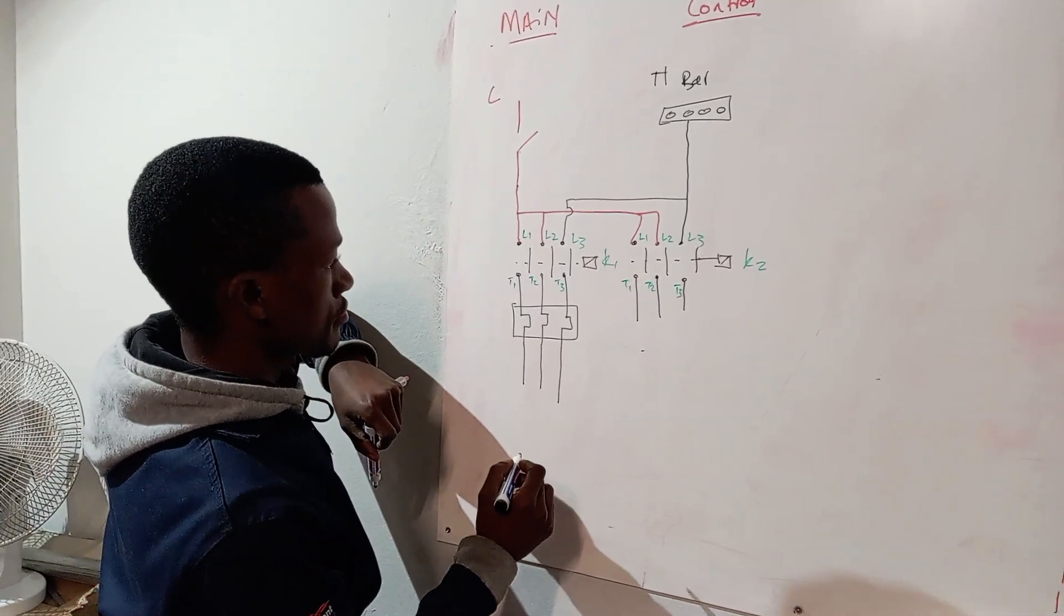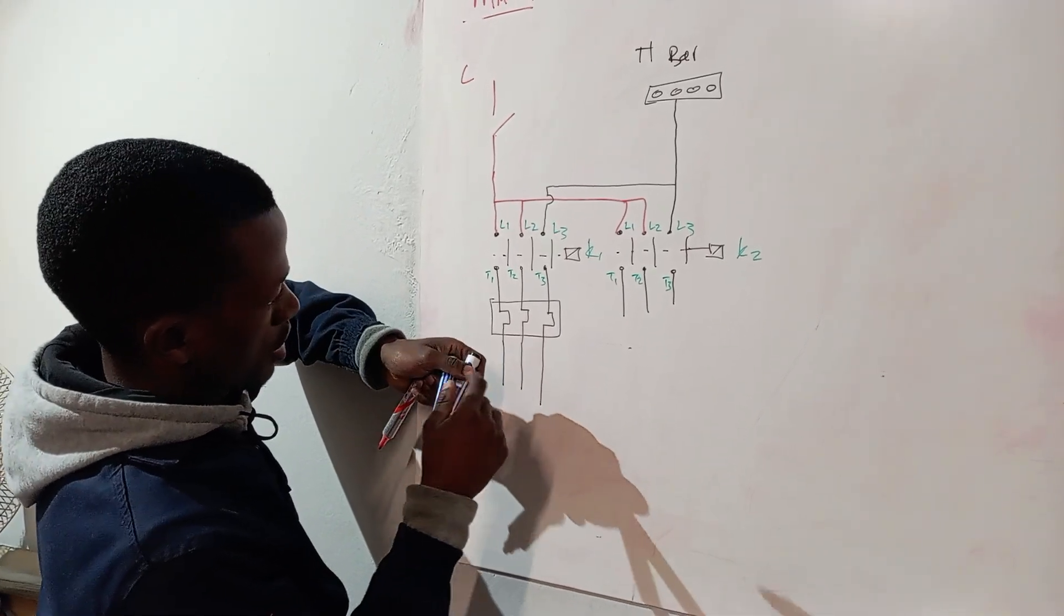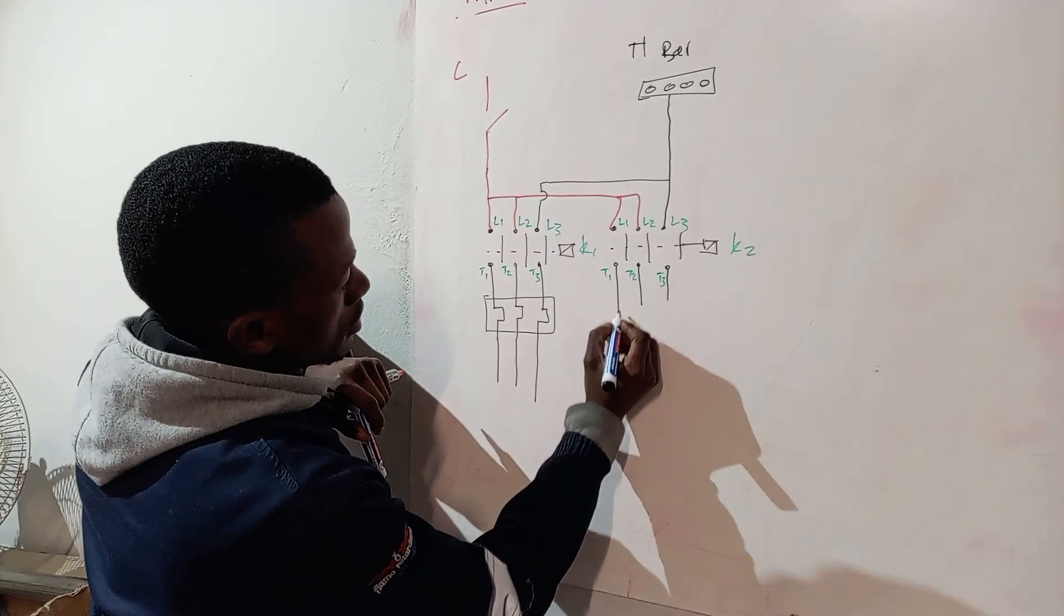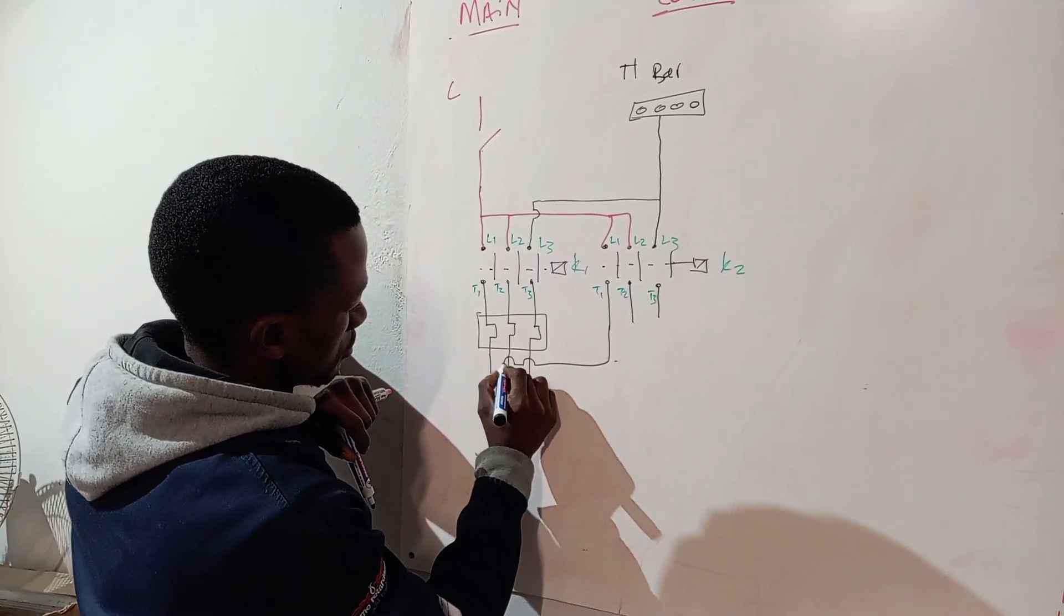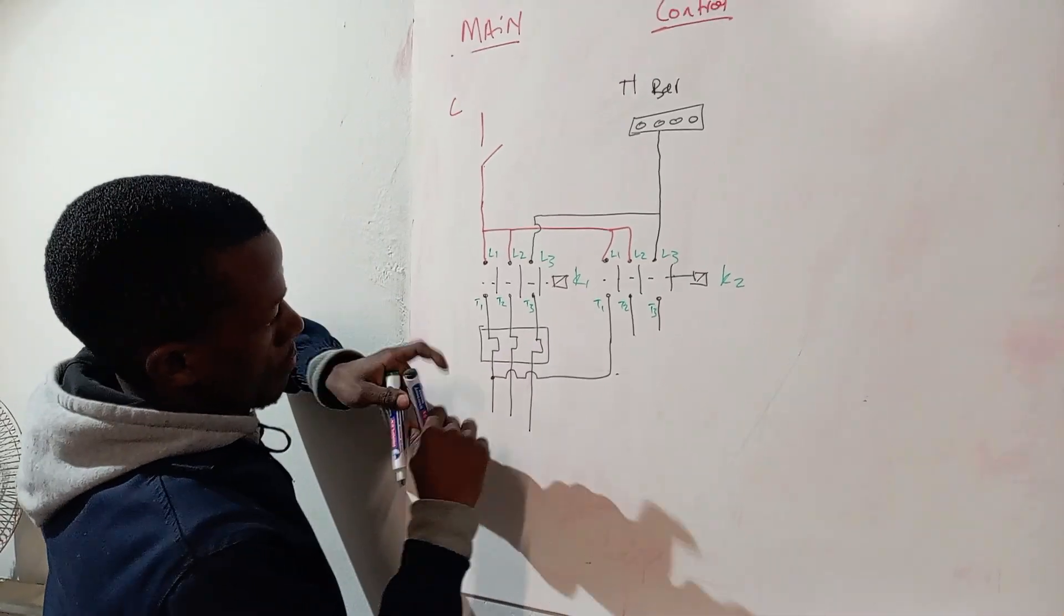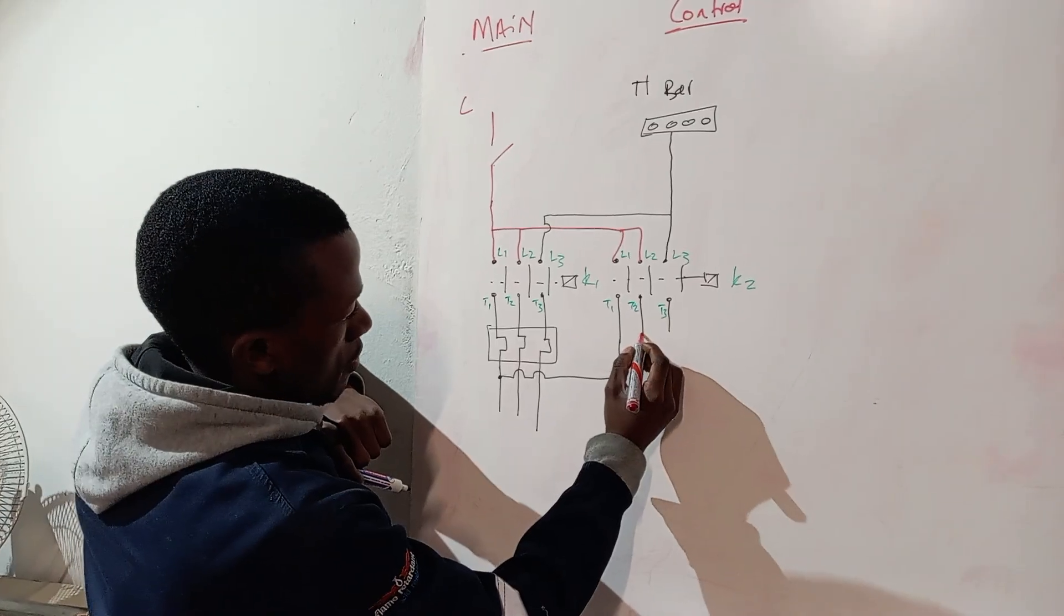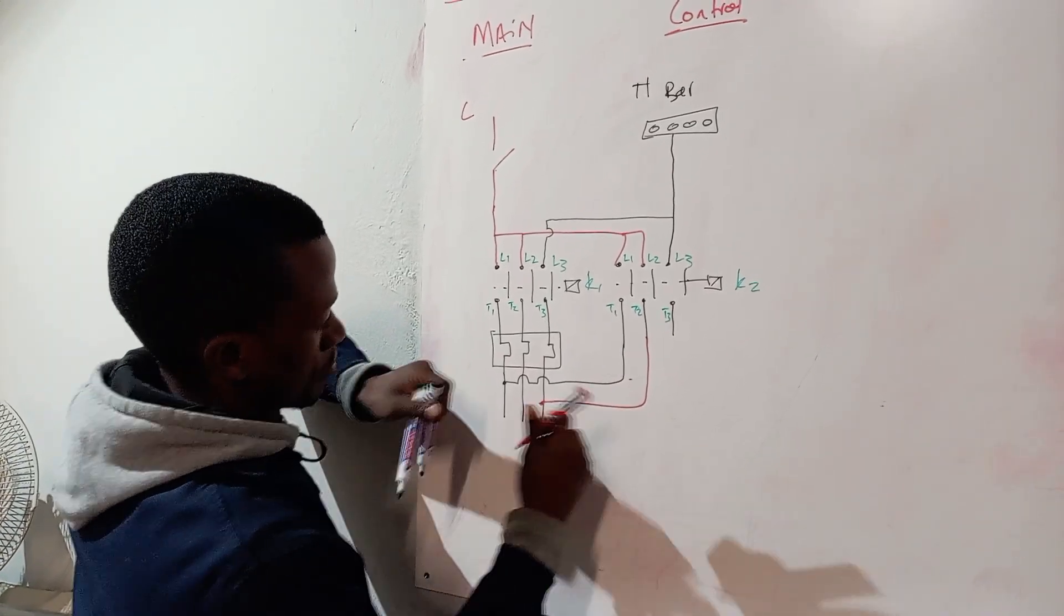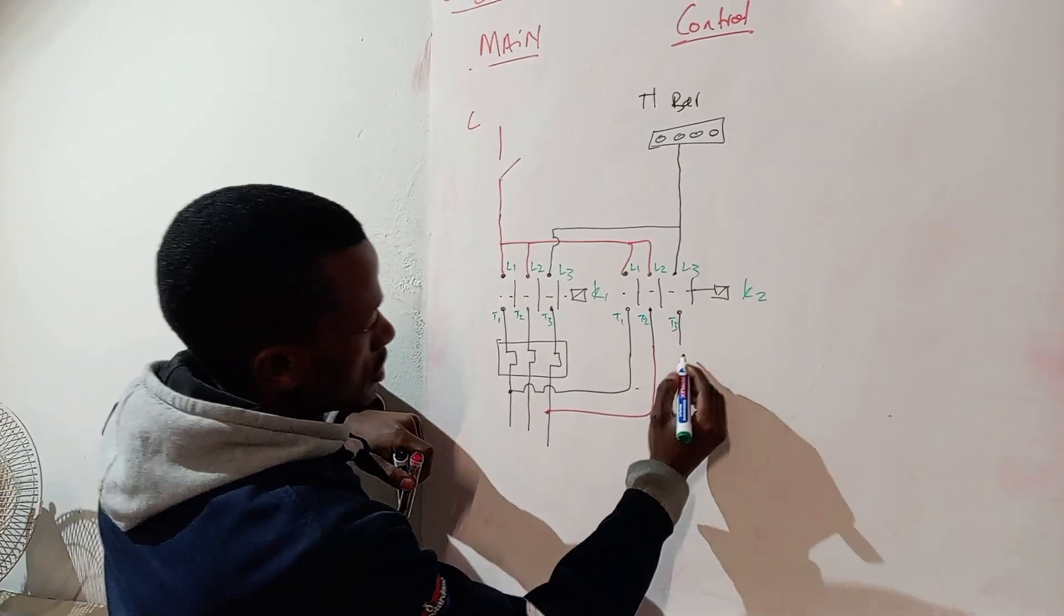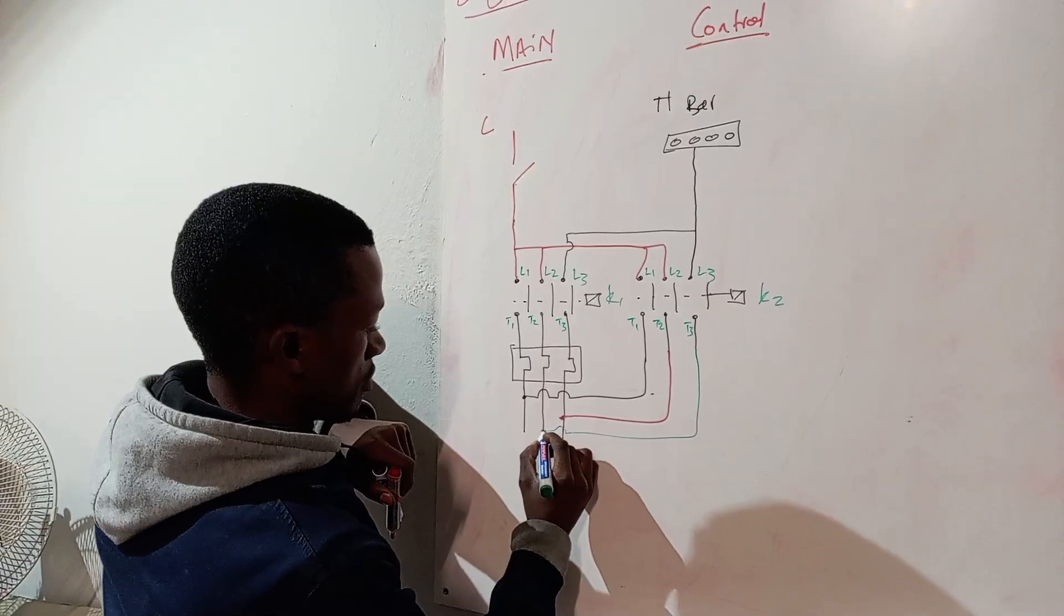And then now here comes the tricky part. Your T1 will come exactly straight to T1, but now you have to interchange T2 and T3. T2 will come to T3 now, and then T3 will come to T2.